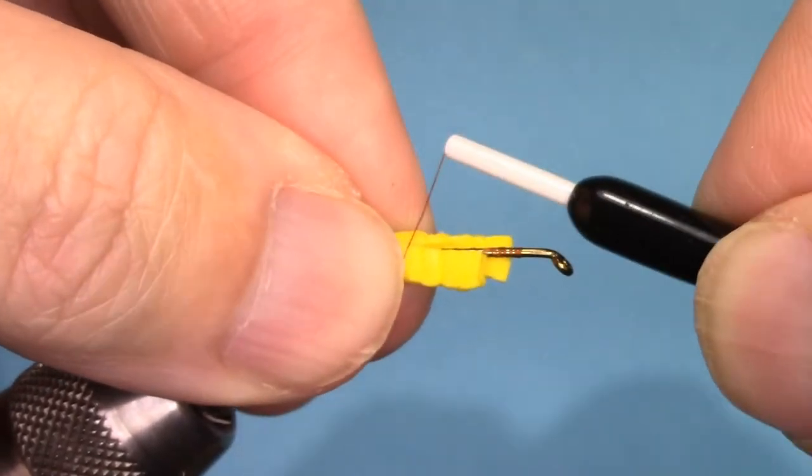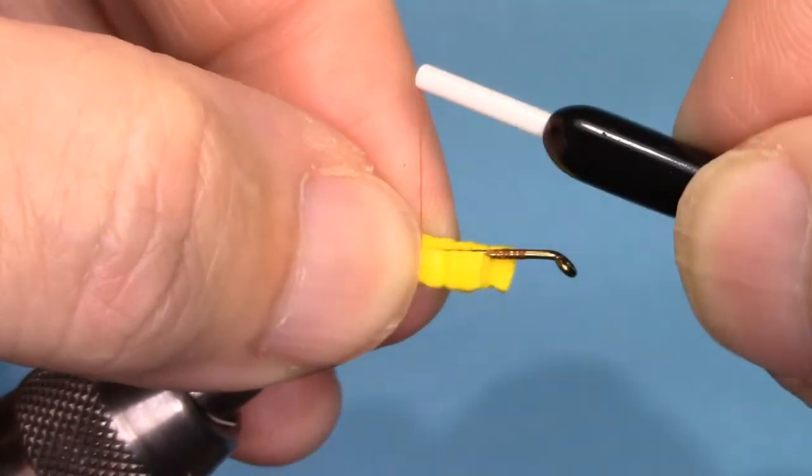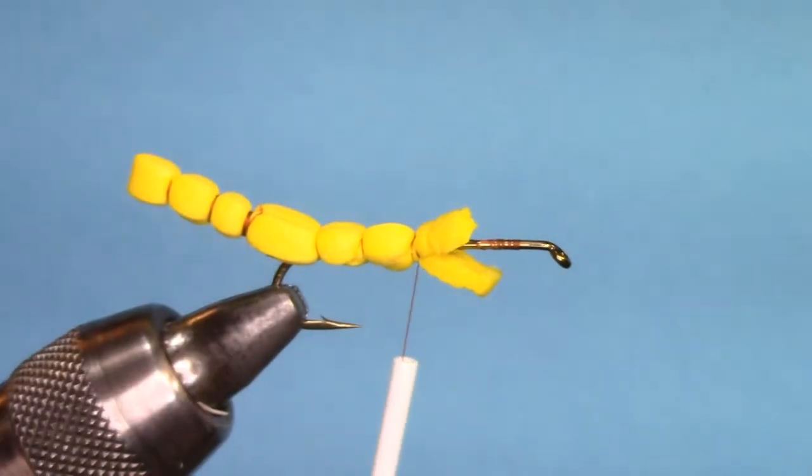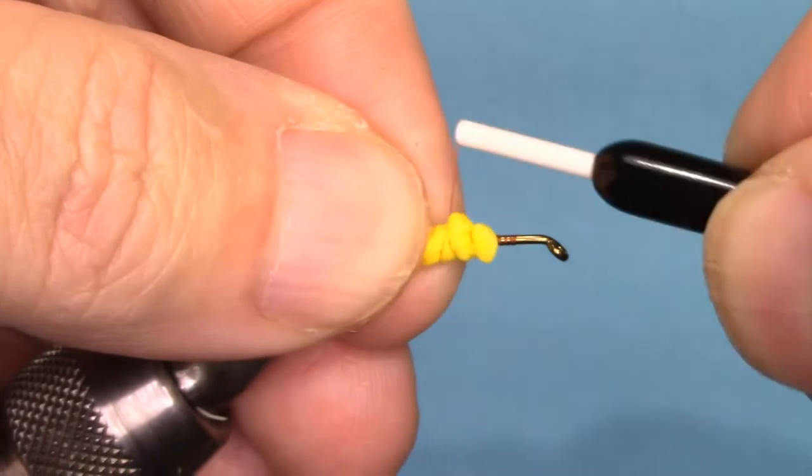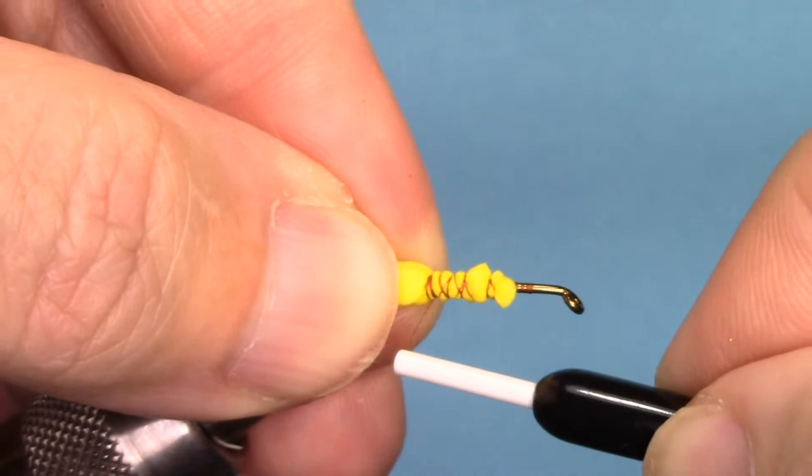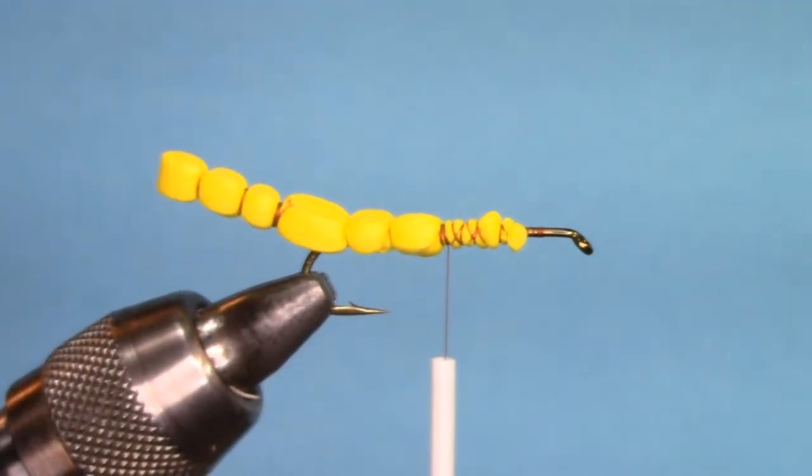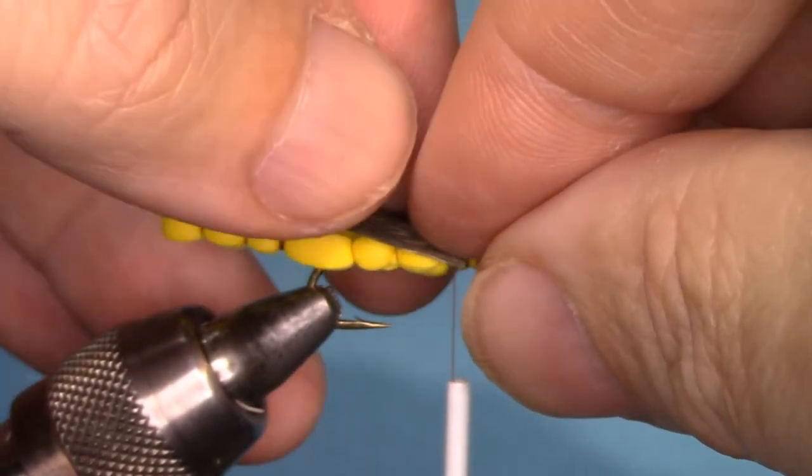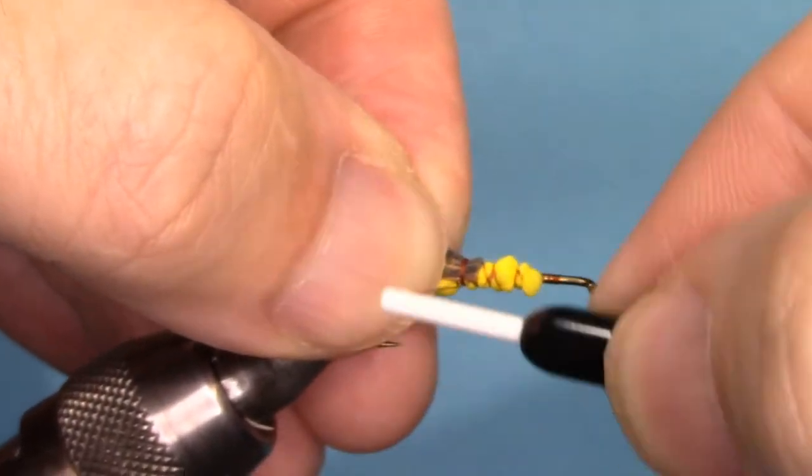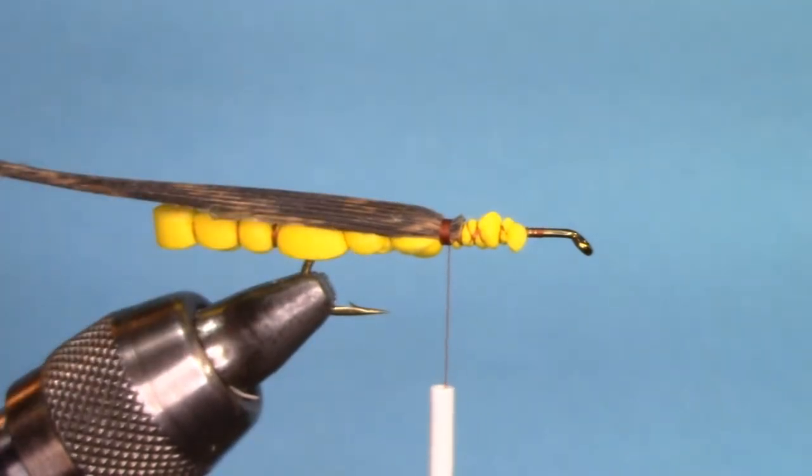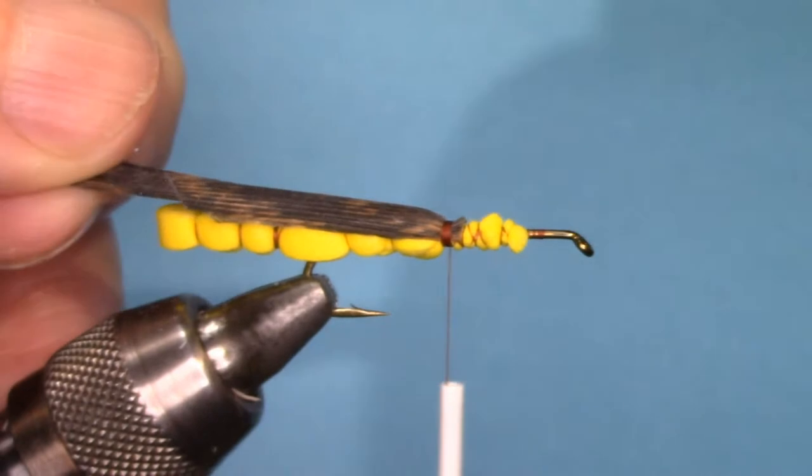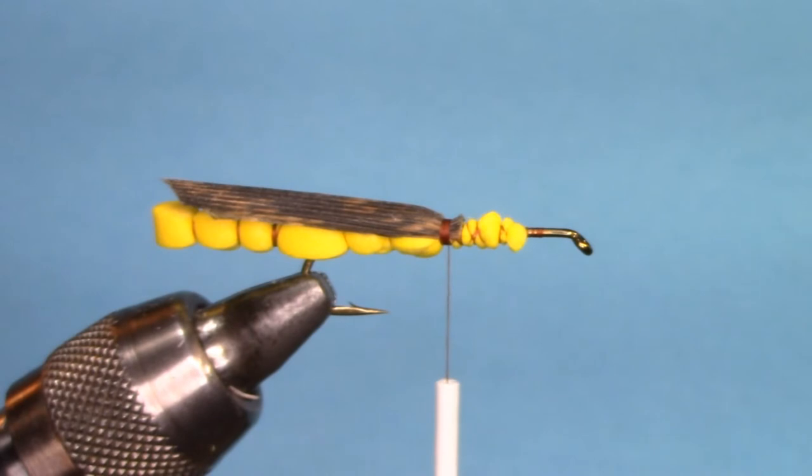Now we have the extended body. I'm going to make the movement forward by the hook shank, and we'll have the body and the extended body. Now we could either bind these down, which I'm going to do, or you can cut them. Now I'm going to take a slip of treated turkey tail. I sprayed the turkey tail with Krylon or you could just use flex cement. I'm going to lay that on top, just cover it. The underwing will be tied in, and then we just cut. There's our underwing.